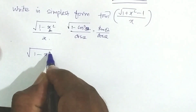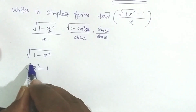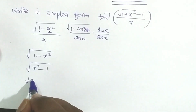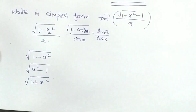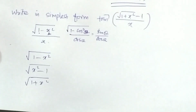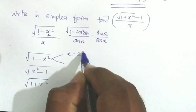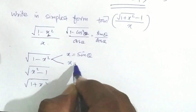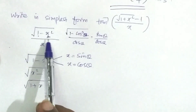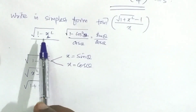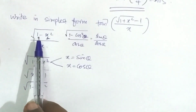There are three types of root expressions: '1 minus x squared' type, 'x squared minus 1' type, and '1 plus x squared' type. For the '1 minus x squared' type under a root, we substitute x equal to sin theta or x equal to cos theta.